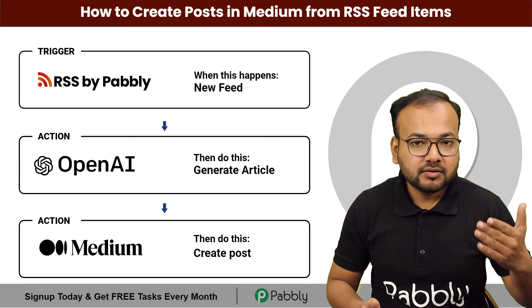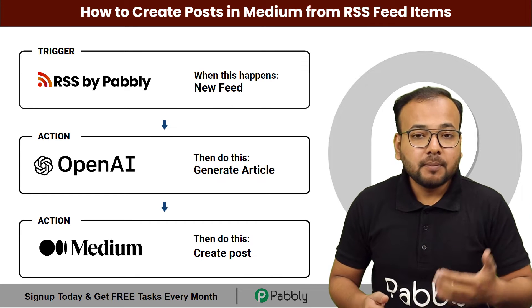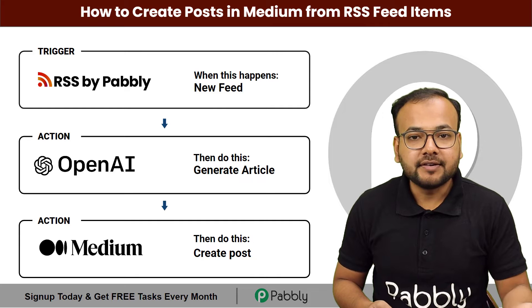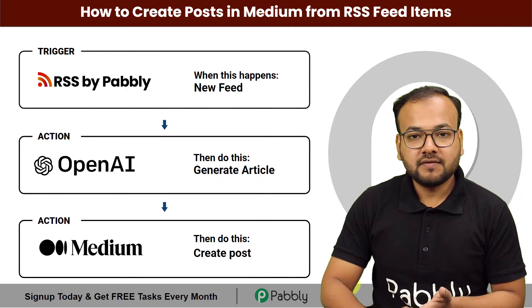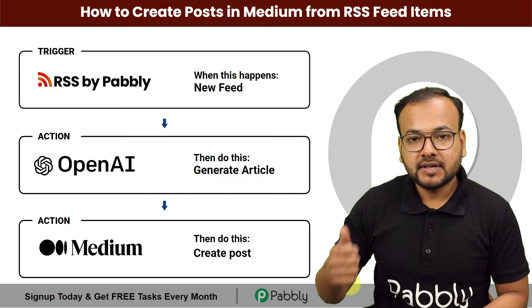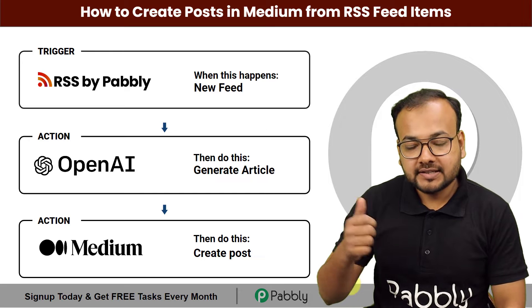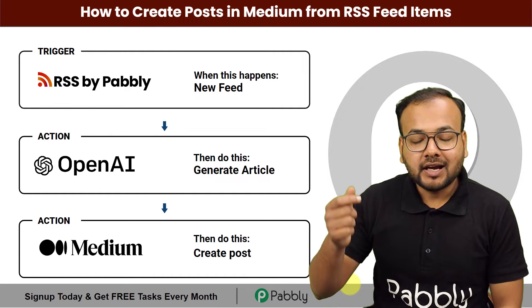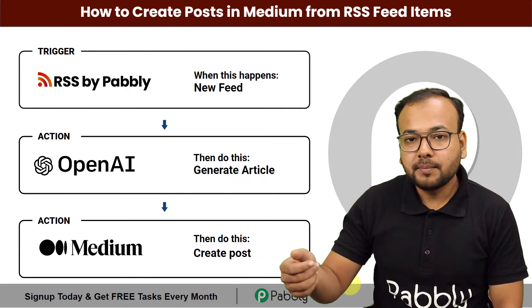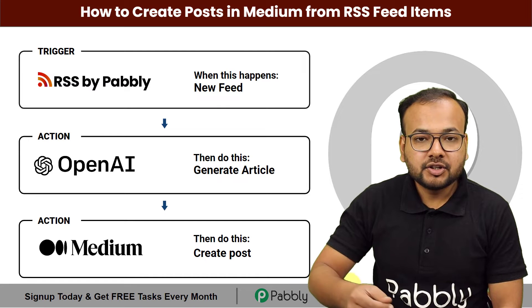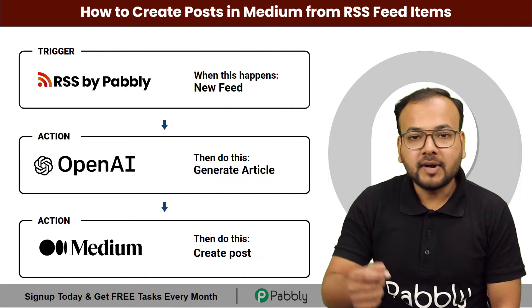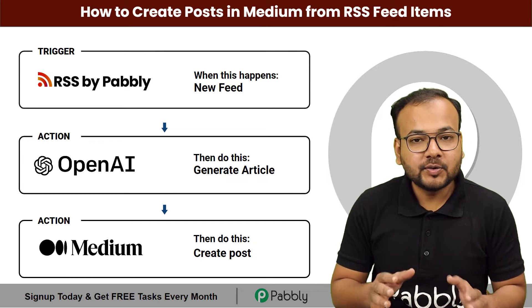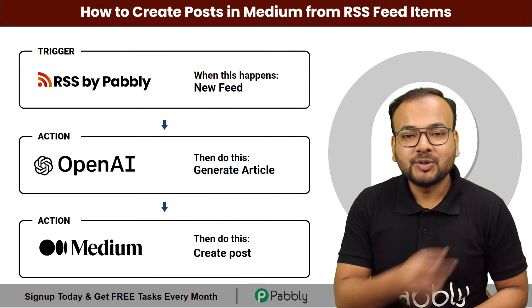After that, we are going to connect Medium, which is a publishing platform for writers. Whenever there is a new post in the RSS section of any website, according to the title or the topic of the post, an article will be created and shared on medium.com automatically. We are going to set up this automation without any coding, very easily. Let me show you how.